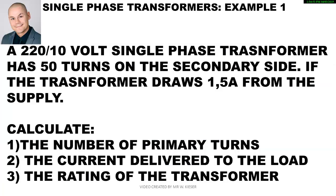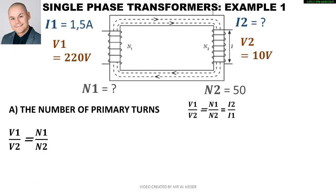Let's have a look at our first example. We have a 220 volt to 10 volt single phase transformer. It has 50 turns on the secondary side. If the transformer draws 1.5 amps from the supply, calculate: one, the number of primary turns; two, the current delivered to the load; and three, the rating of the transformer. Let's first draw the core of the single phase transformer and label it fully.